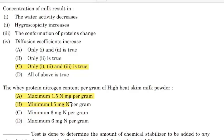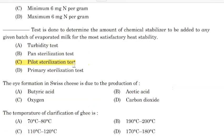The whey protein nitrogen content per gram of high heat skim milk powder — Correct answer: Option A — maximum 1.5 mg per gram. Eye formation in Swiss cheese is due to the production of — Correct answer: Option D — Carbon dioxide.